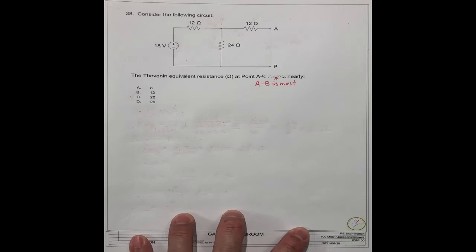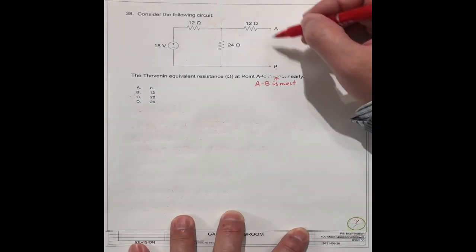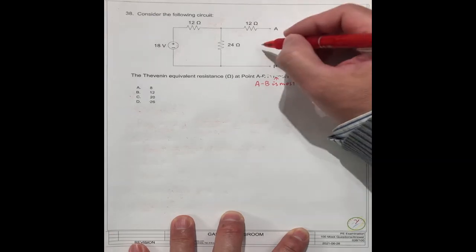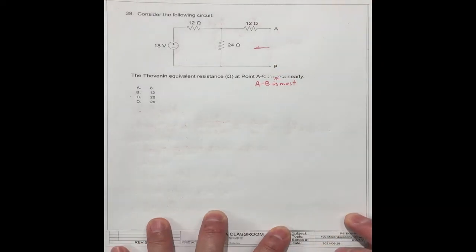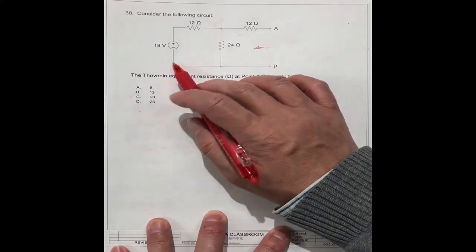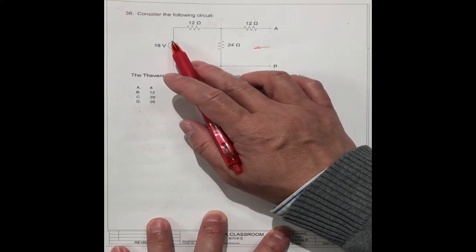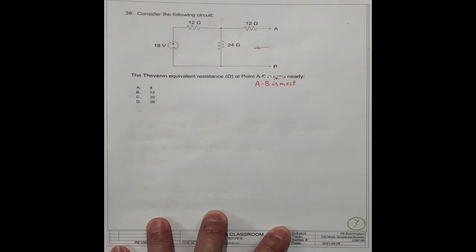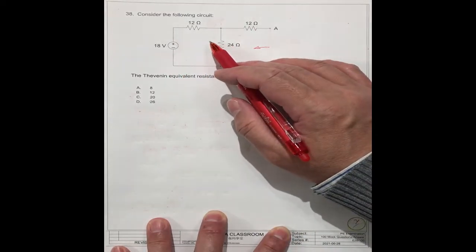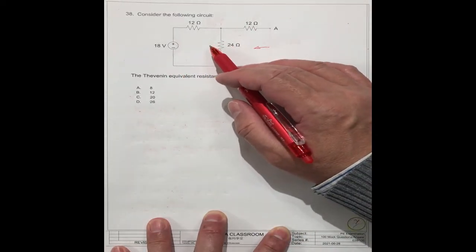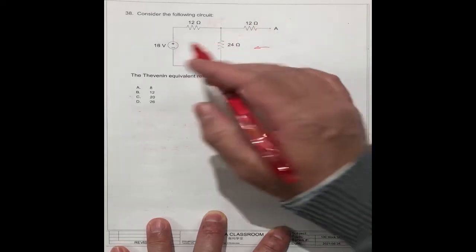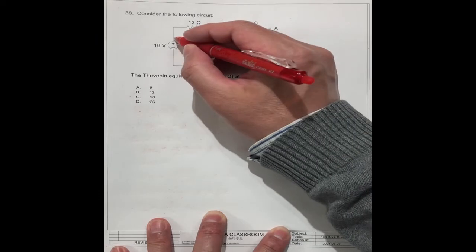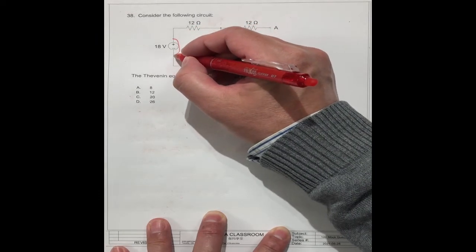When you're doing the Thevenin equivalent resistance from the point A and B, you just look at it inside this way. When inside they have the voltage power source, we should short the voltage power source. If there is a current power source, we should open the current power source. In this question, they have the voltage power source inside. We just need to short these two points.